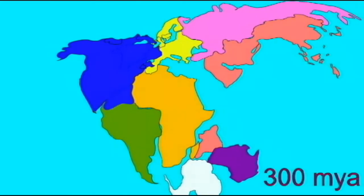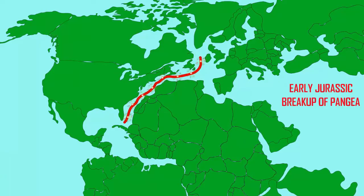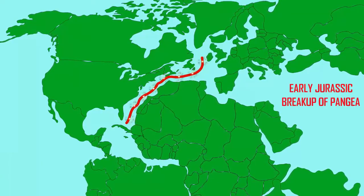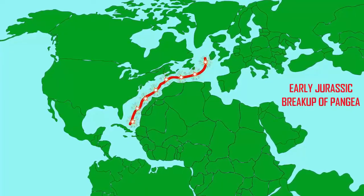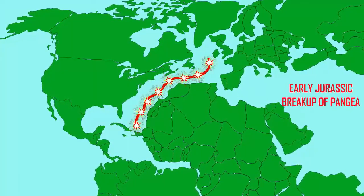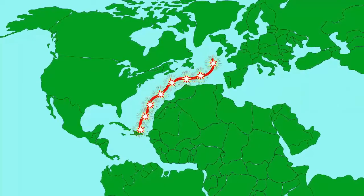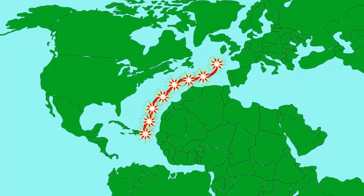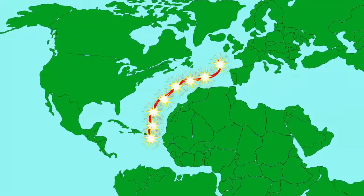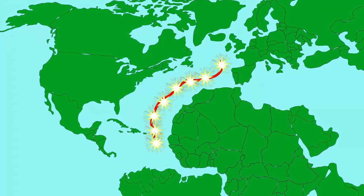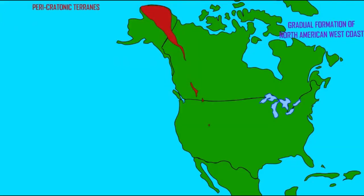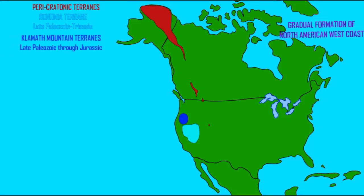There were no volcanic eruptions associated with this — it was simply uplift. When Pangaea broke up in the Triassic period, this started North America moving west, where it contacted the ocean plates to its west and started a subduction zone. Much of Western North America did not physically exist attached to the original nucleus of the continent, Laurentia.